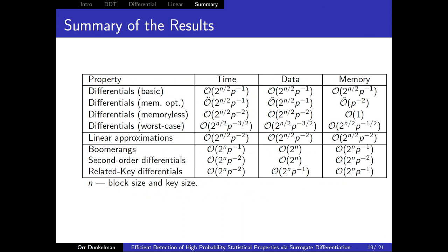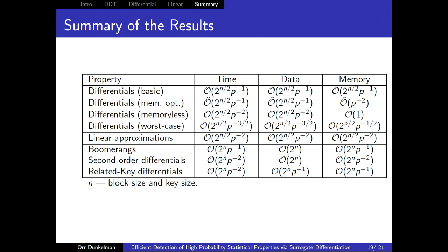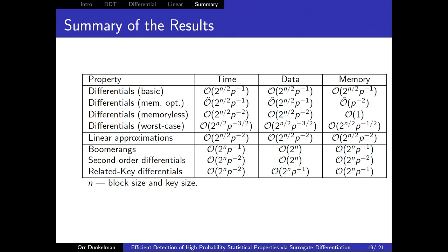Question from audience: What happens in the worst case when the gamma selected doesn't make x and x XOR gamma a good pair? Answer: For the differential cryptanalysis case we have the worst-case algorithm because we try different gammas. There is a set of good values with respect to the differential, and because we test enough gammas we can show that we are essentially guaranteed to hit one of them.